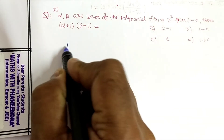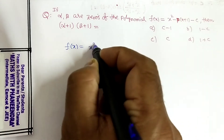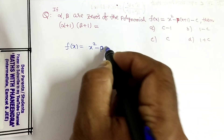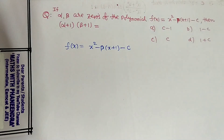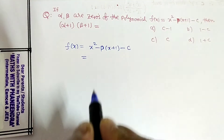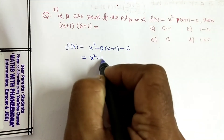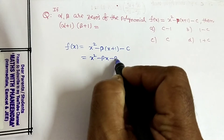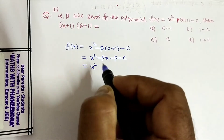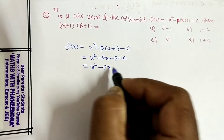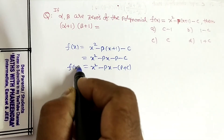So first, the given polynomial is f of x equal to x squared minus p into x plus 1 minus c. We need to write this in the standard a x squared plus b x plus c form, which gives us x squared minus p x minus of p plus c. This is the polynomial.